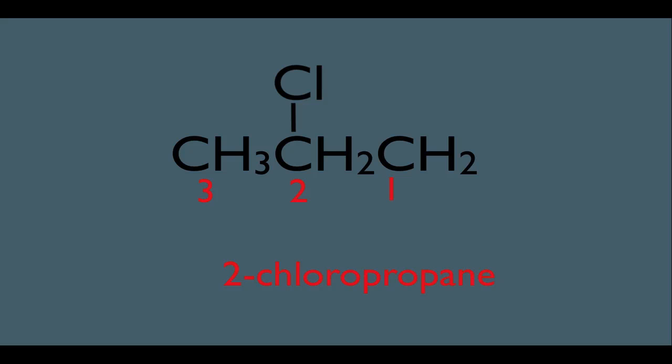However, notice there happens to be no such thing as 3-chloropropane, because if the chlorine is here, then in step two, your numbering would be this way. And the name of this molecule, of course, is 1-chloropropane, which is identical to the first molecule we looked at here.